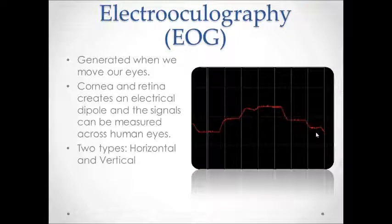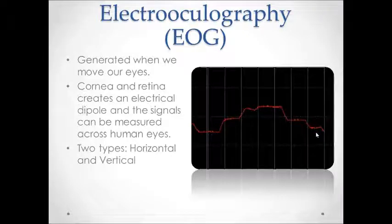Now a little about EOG signals. Electro-oculography signals, or EOG signals, are produced by our eye movements. When we move our eyes, the retina and cornea create an electrical dipole which emits electrical signals. These signals can be measured using electrical probes and used for human-computer interaction.